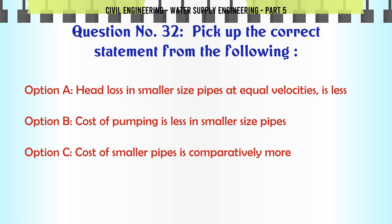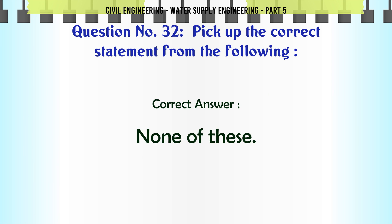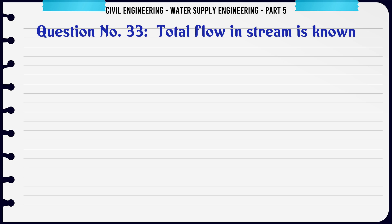Pick up the correct statement from the following: A. Head loss in smaller size pipes at equal velocities is less; B. Cost of pumping is less in smaller size pipes; C. Cost of smaller pipes is comparatively more; D. None of these. The correct answer is None of these.